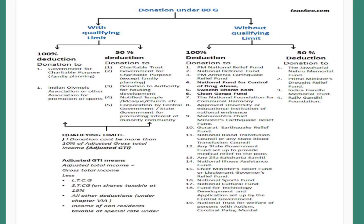There are various donations made to the Jawaharlal Nehru Memorial Fund, Prime Minister's Drought Relief Fund, Indira Gandhi Memorial Trust, and Rajiv Gandhi Foundation. For these four donations, 50 percent of the amount of donation shall be allowed as deduction. Then we have donations with a qualifying limit, also divided into two categories.